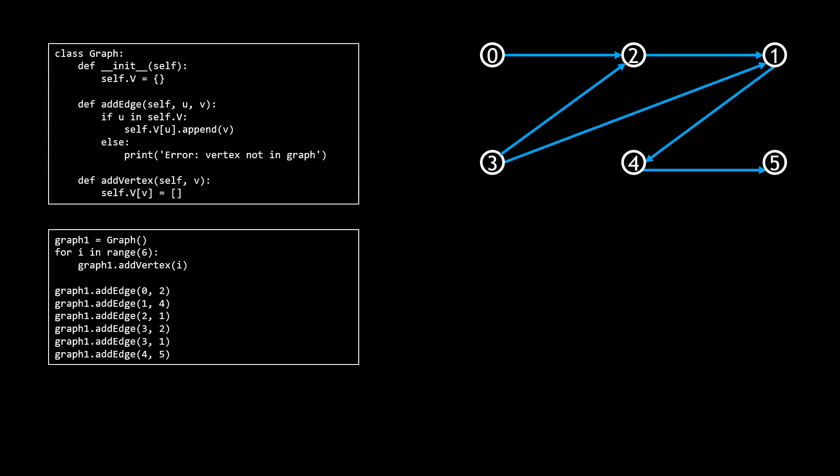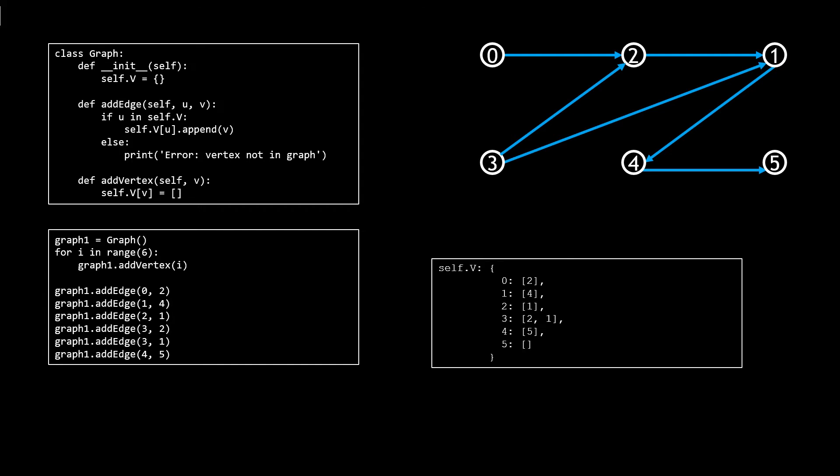To create a graph we call the constructor, add some vertices, and add some edges. If we wanted to model the following graph we would make the following calls in main, and this would be what the underlying dictionary looks like. Pause the video to make sure you understand the representation, then let's move on to depth first search.